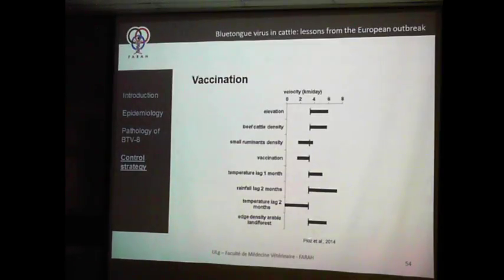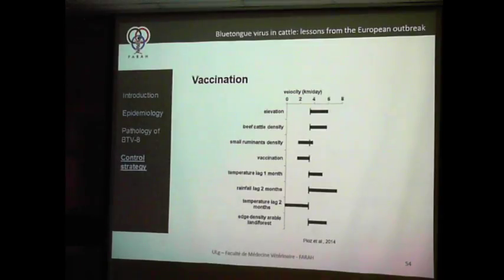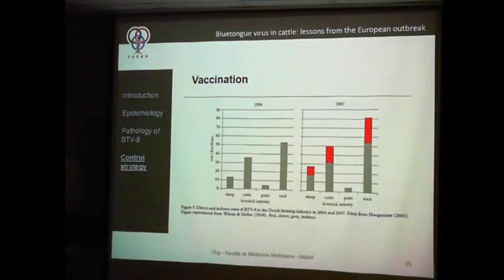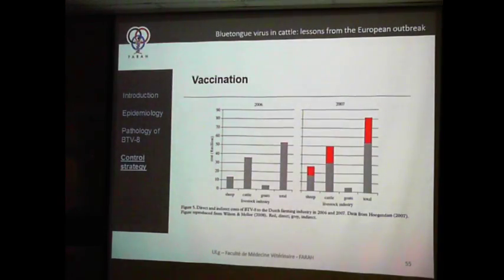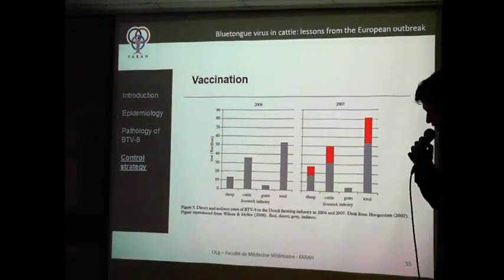When temperature is low, development of Culicoides is not possible. There is nothing you can do about weather — the only thing you can act on is vaccination. The economic impact is extremely important and has been carefully assessed.